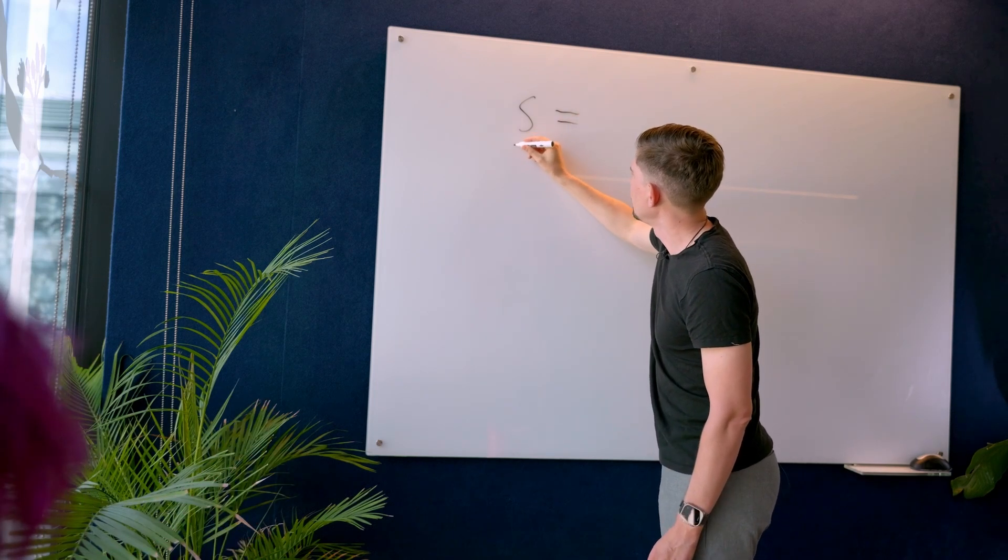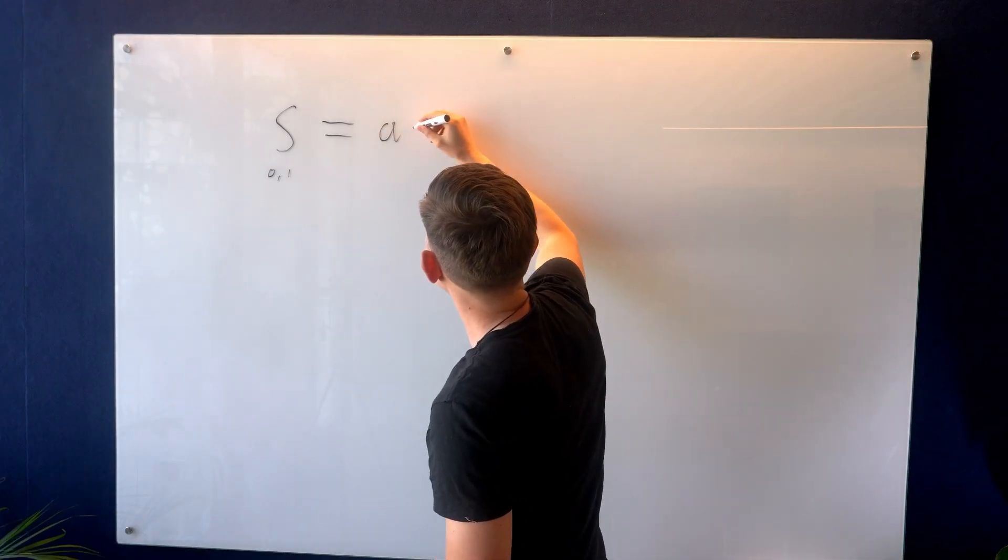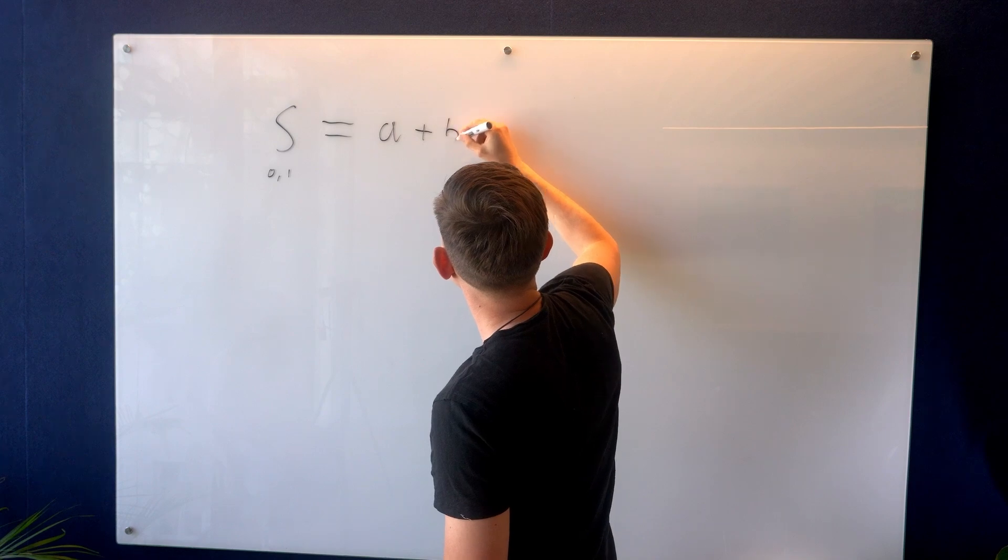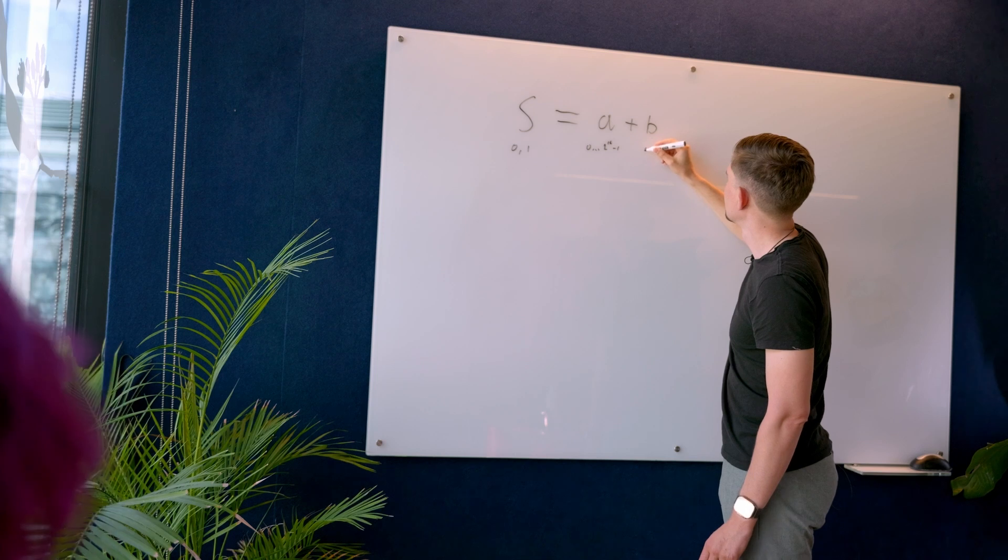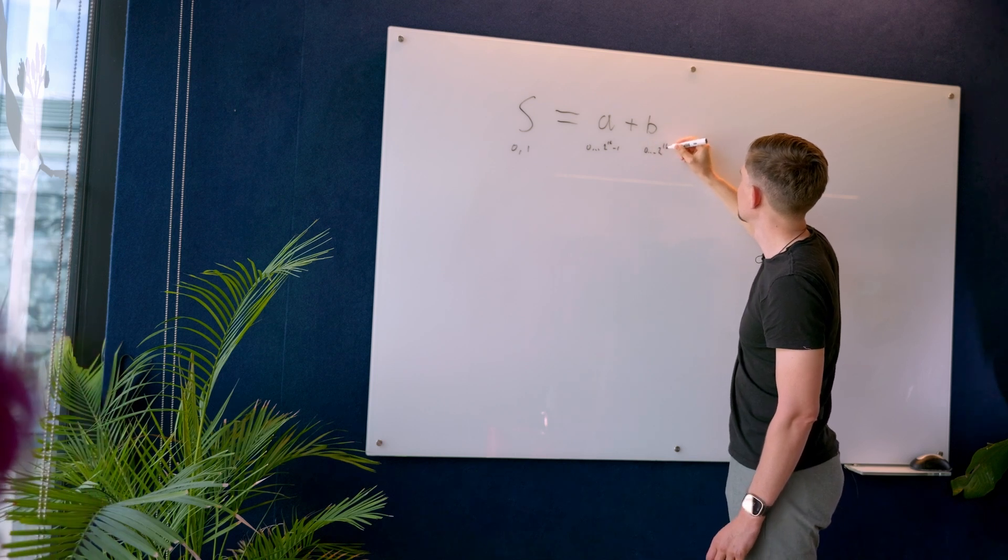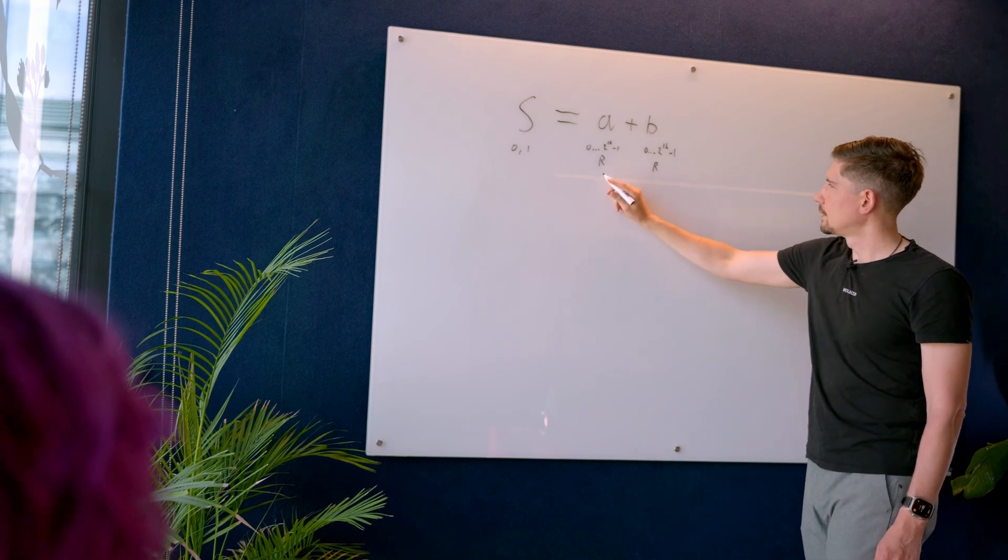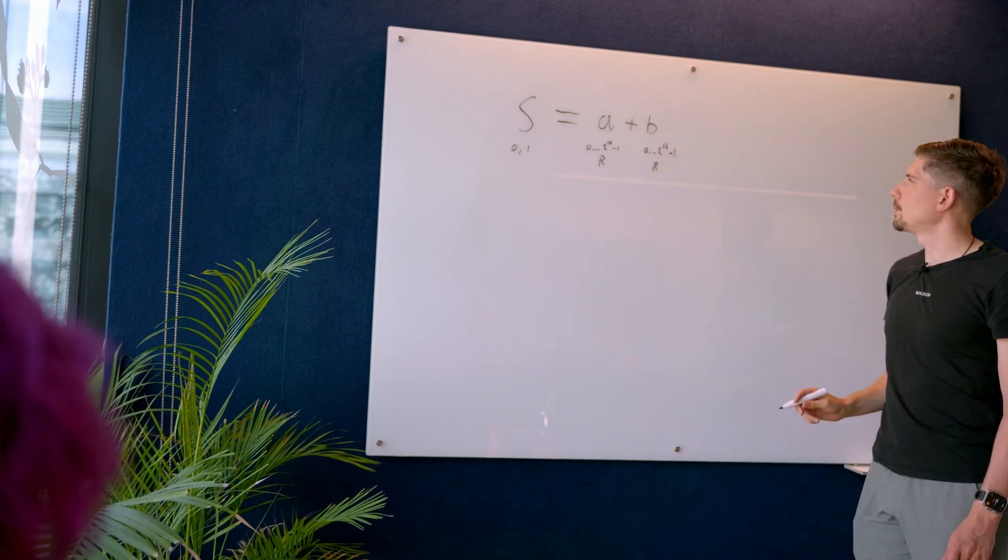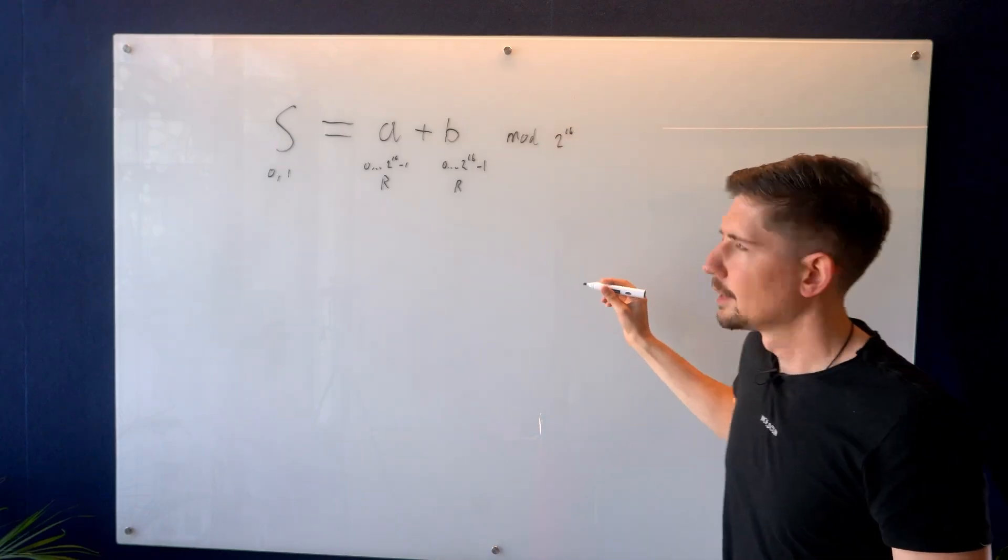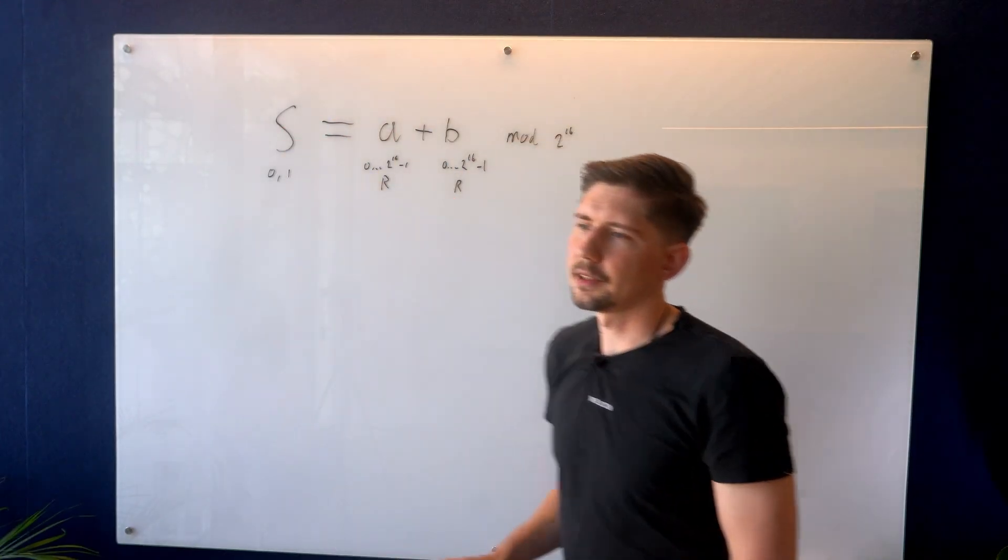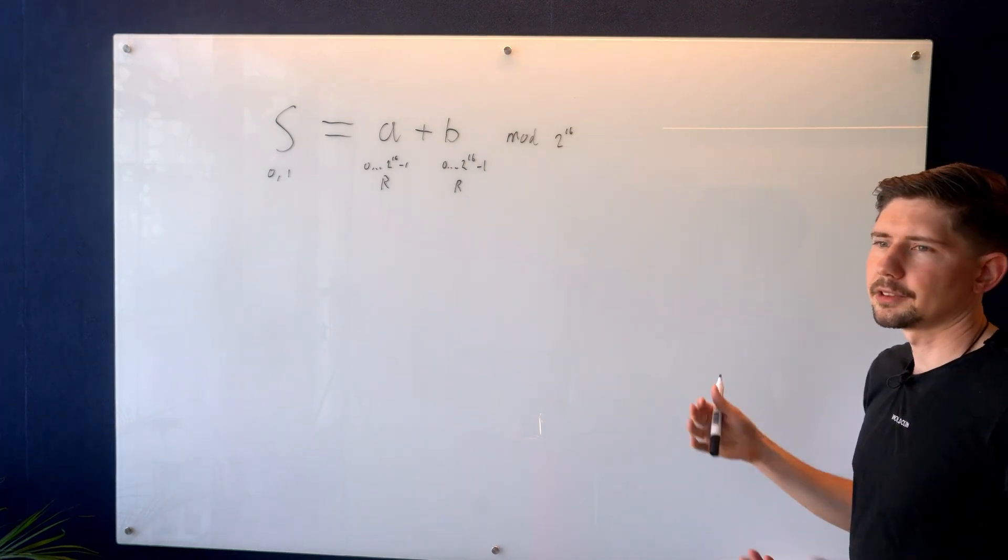Yeah, in fact, this would be a zero or a one. Okay. Then we store this as two values, a plus b. And these can be anything from zero to two to the power of 16 minus one. And this would be the values that the parties have? Yes. And then these are random. Independently, these are uniformly random. So they reveal absolutely no information. It is only when you add them together, modulo two to the power of 16, that you get the original result back. Yeah. So this is how a very simple so-called additive secret sharing scheme works.